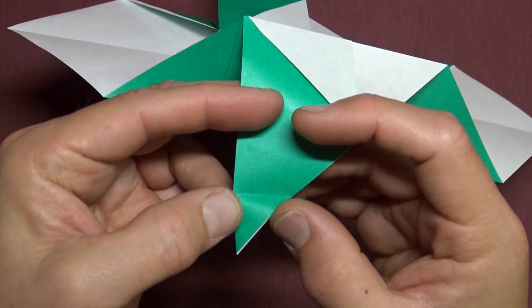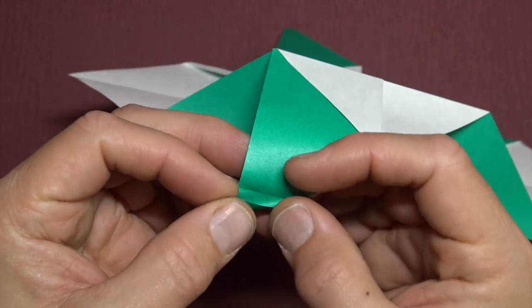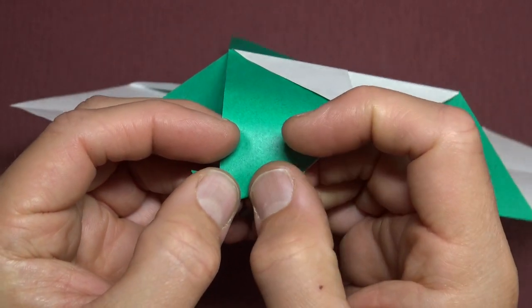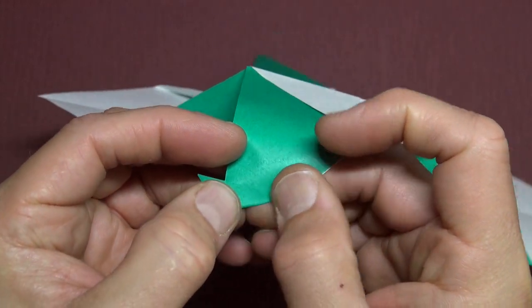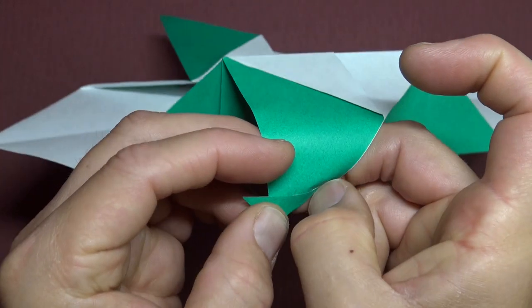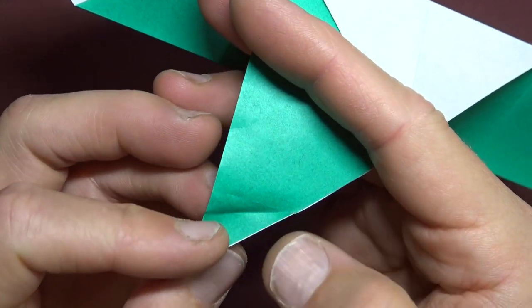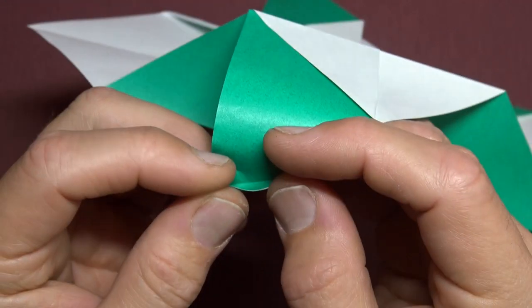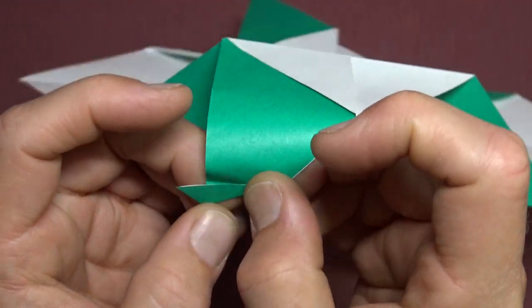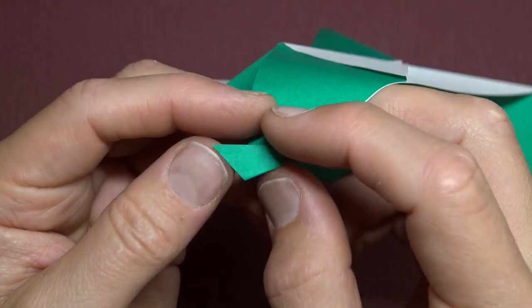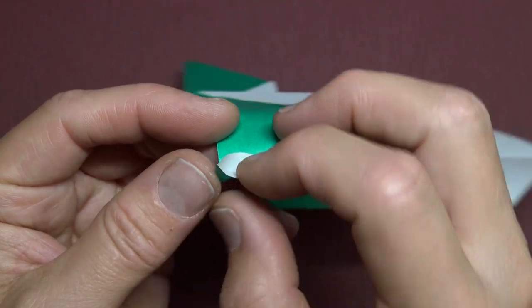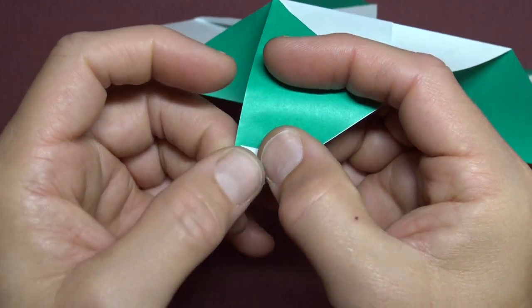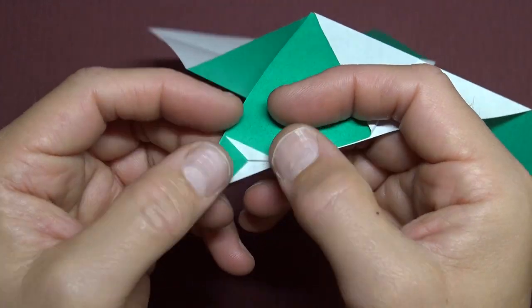And now fold this edge to the crease. But we actually want to go a little tiny bit past the crease, just a hair. So it's like that. We're still folding on this point. And open. And squash. So this is the snowman's hand.